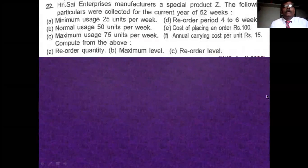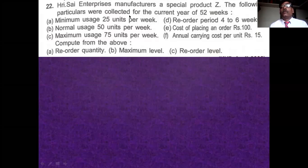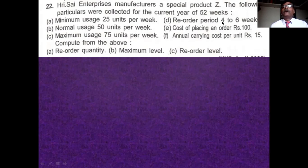Now we see example number 22. Three Hurry Enterprises manufactures a special product called Jet. They give the following information for the current year of 52 weeks. Minimum usage is 25 units per week and the reorder period is four to six weeks.